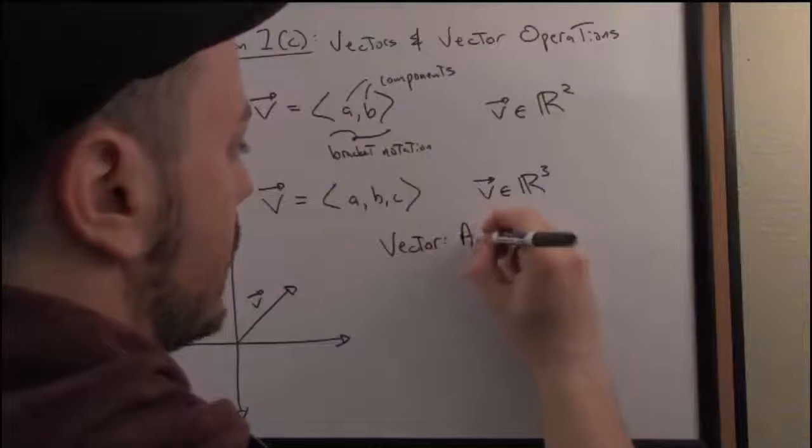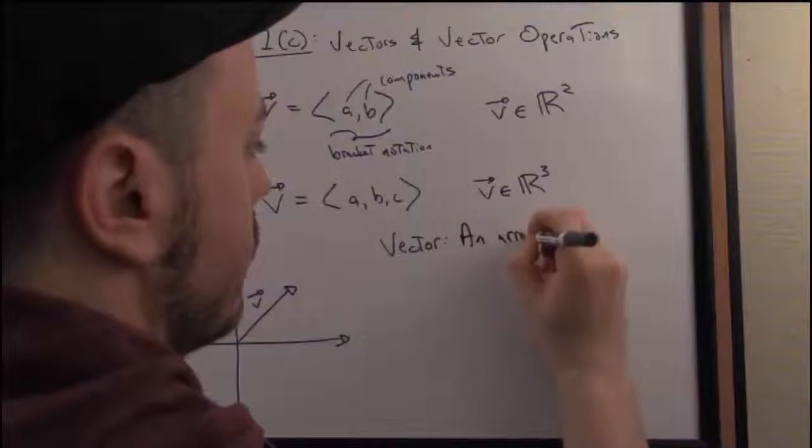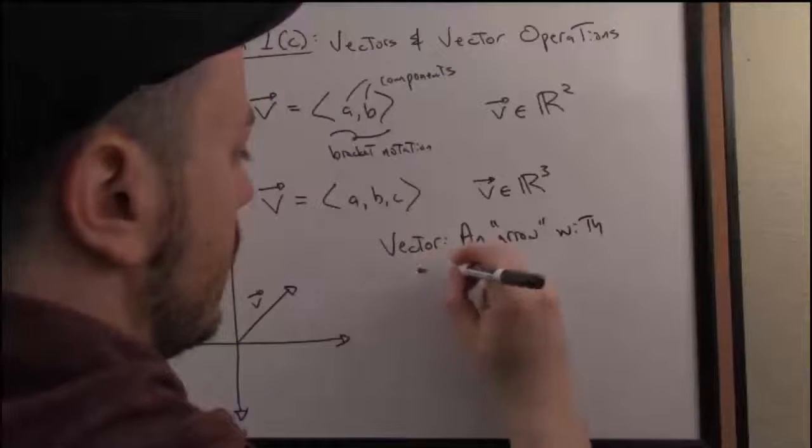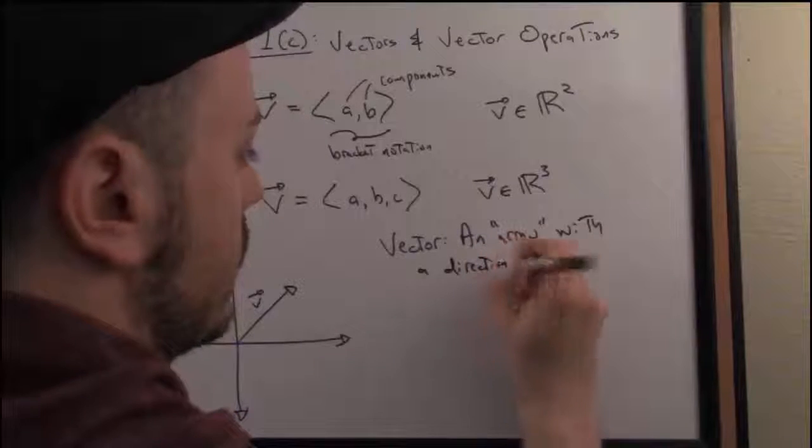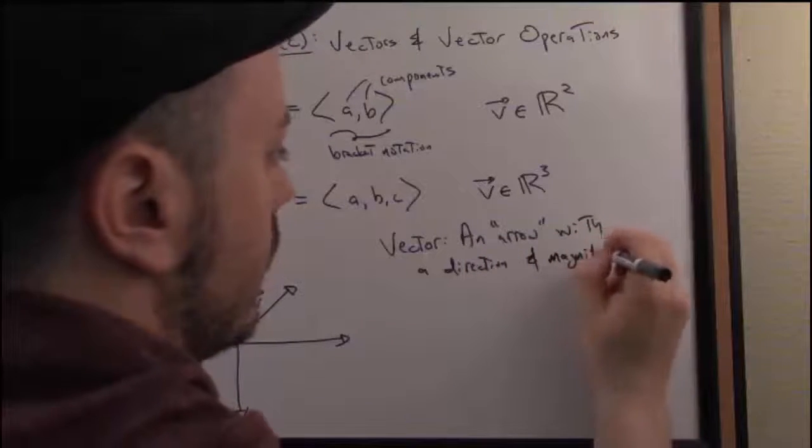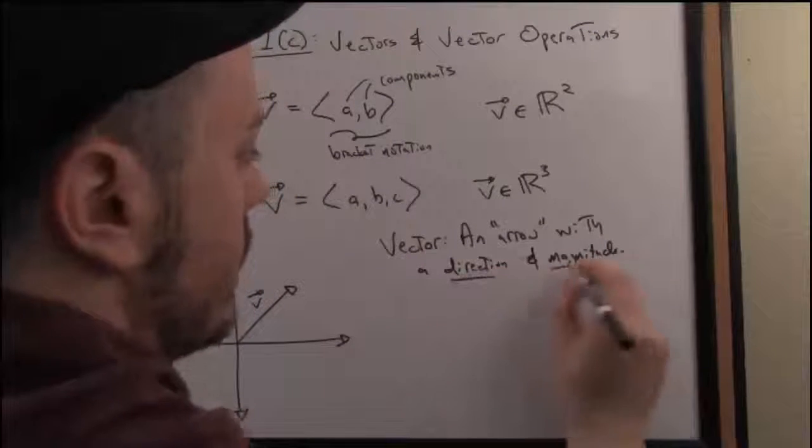A vector is, let's say, an arrow with a direction and magnitude. It's the defining features of a vector. So what's meant by direction and magnitude?